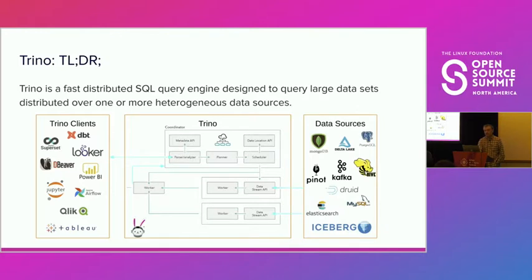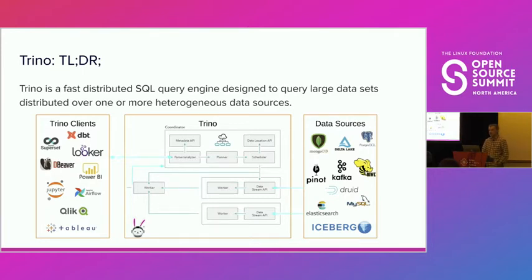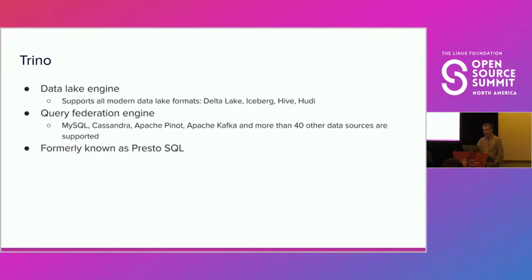For those who are not familiar with Trino, let me give you a high-level overview. Trino is a distributed data processing engine that allows processing large datasets distributed over one or more heterogeneous data sources. It provides an ANSI-SQL compatible interface for doing computation. Trino is a data lake engine supporting all modern data lake formats such as Delta Lake, Iceberg, and Hive.